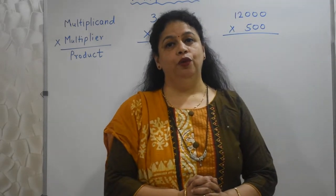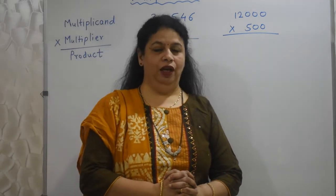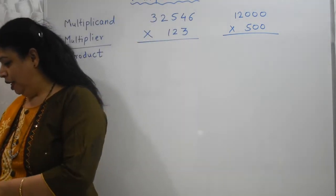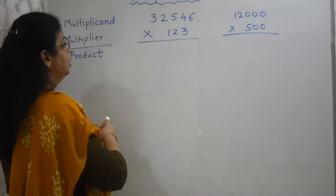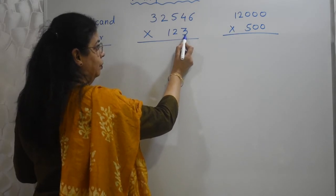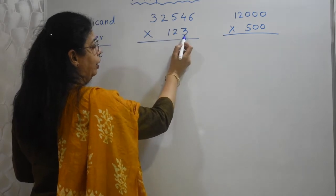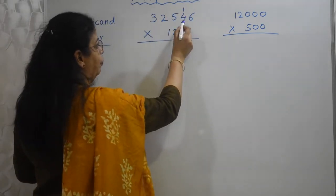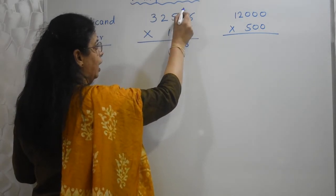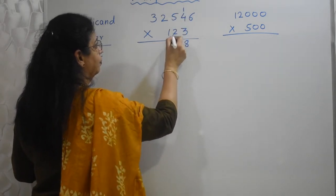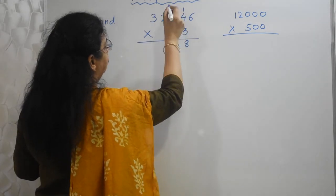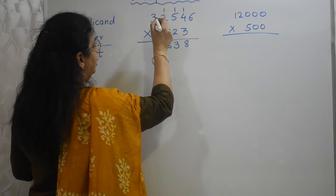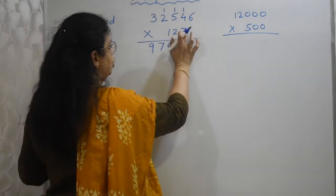So we will do 5 digit multiplication by 3 digit. We will multiply 5 digit number by 3 digit number. I have taken one example. See students, first we need to start with this 3. Assume only 3 is there, 12 is not there. How will you do? 3 into 6, 3 6s are 18. Carry over. 3 4s are 12 plus 1. You always add this carry over. 13. Carry over. 3 5s are 15 plus 1, 16. 3 2s are 6 plus 1, 7. 3 3s are 9. Now my multiplication by 3 is over.